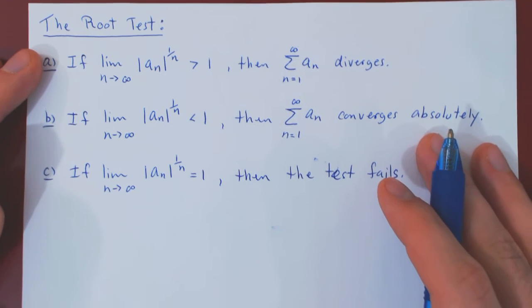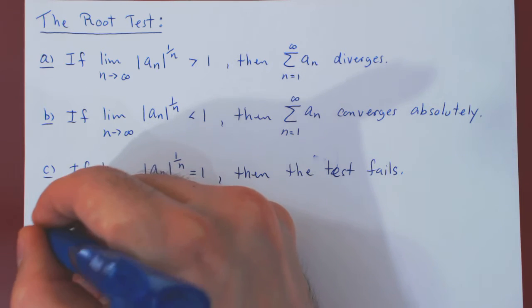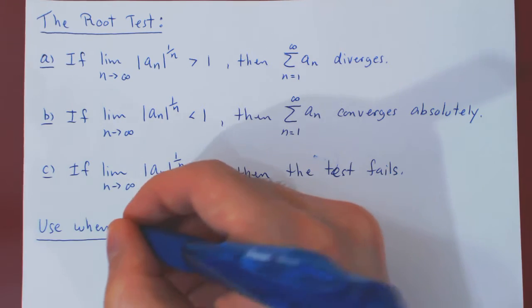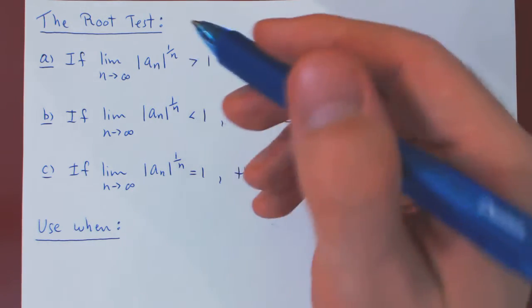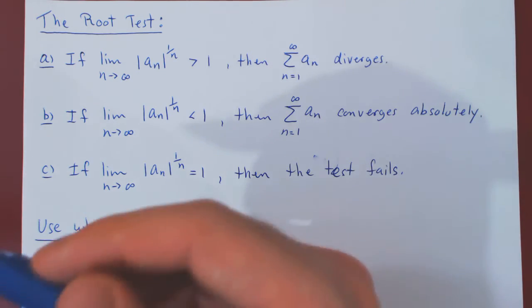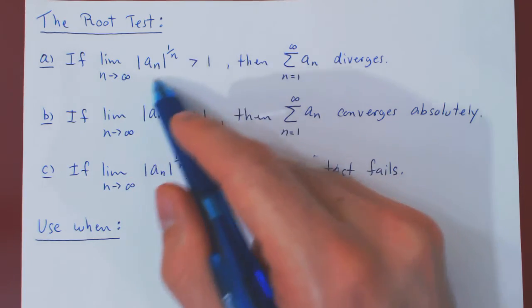A natural question to ask, of course, is when should one use the root test? And the answer is, what we hope to happen is that the nth root of an is a fairly simple expression, so we can then evaluate its limit without too much difficulty.